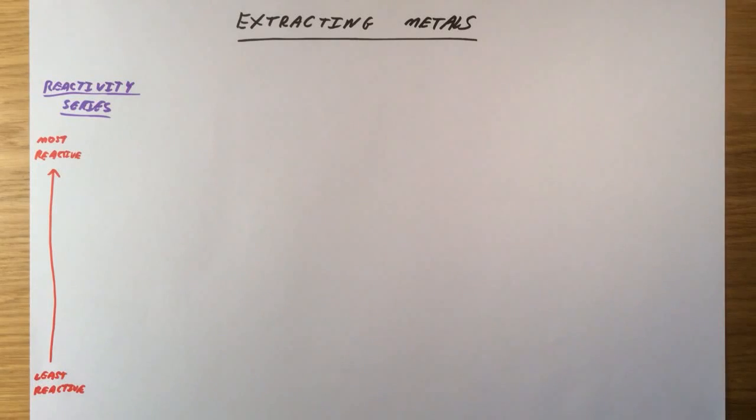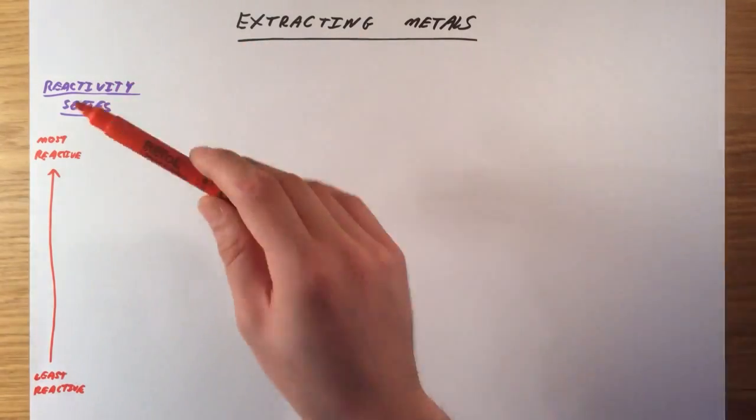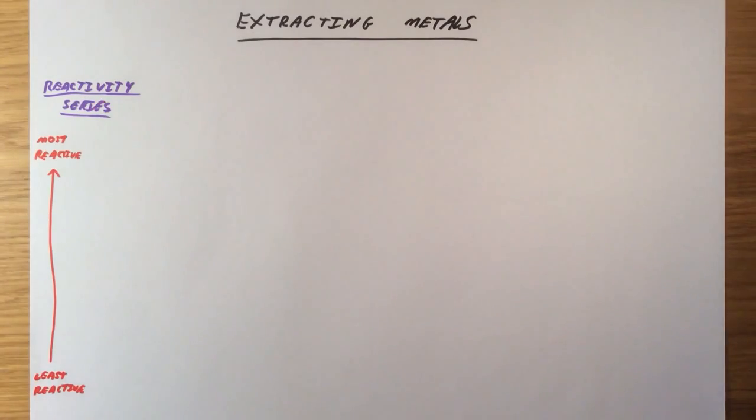Metals are used for such a massive number of different materials and products that it's really important that we know how we actually get them out of the Earth's crust. And the way I normally think about this is to divide them up into three sections. This is all based on something called a reactivity series, which tells us which metals are most reactive and which are least.